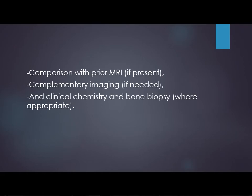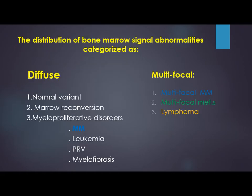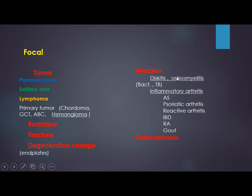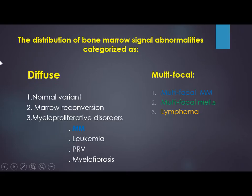Just to remember the table — we are discussing the distribution of bone marrow signal abnormality. It may be diffuse, multifocal, or focal. We have previously discussed marrow reconversion and some myeloproliferative disorders. Today we discuss multifocal lesions: multifocal metastasis, multiple myeloma, and lymphoma. All three — metastasis, myeloma, and lymphoma — can also occur in a focal form.